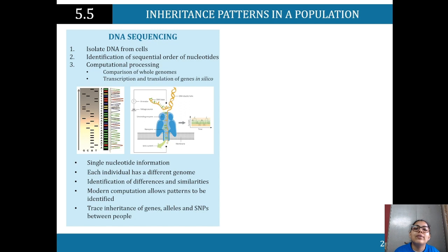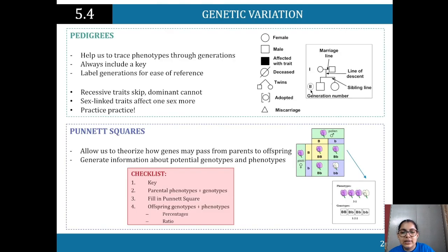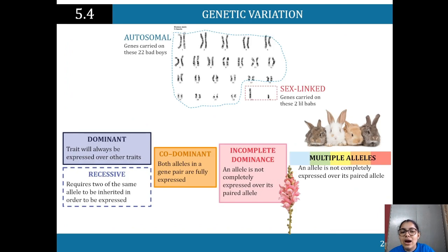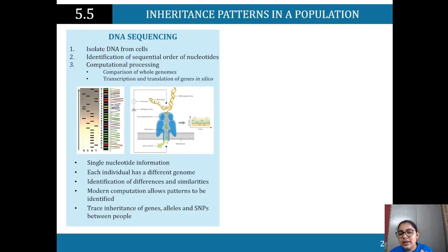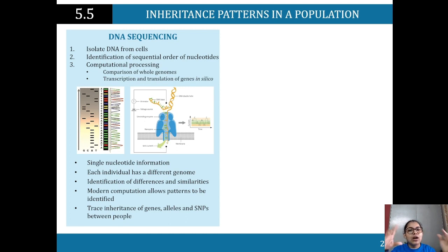Let's start with DNA sequencing — how are we predicting DNA patterns now? We looked earlier at pedigrees and Punnett squares so we could predict different variations of phenotypic expression. Now we look at how DNA sequencing allows us to look specifically at the DNA where it codes for a specific allele — for instance, the allele coding for hair color or eye color.